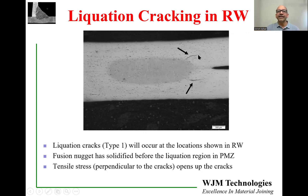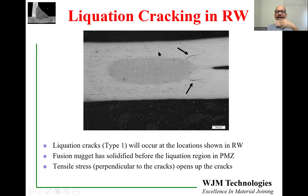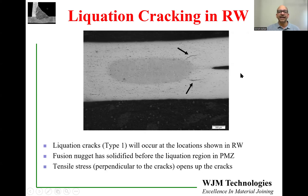The fact that we can see liquation cracks at the edge implies that there was tensile stress there. There is compressive stress in the middle because of the welding, and what is happening is the two sheet metals are trying to separate out as the compressive stress acts in the center. That results in tensile stress towards the edge of the nuggets which, under certain situations, can produce cracks. So if you are making a resistance weld and you make a cross section, look for liquation cracks on the edges of the nugget.